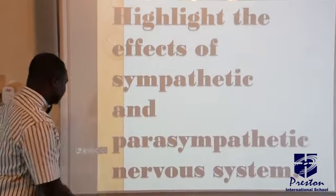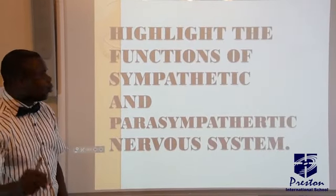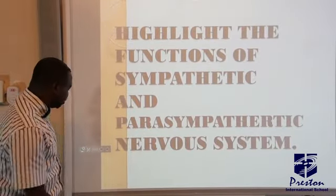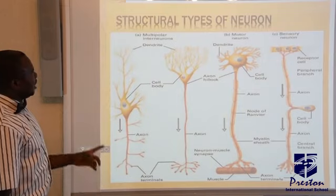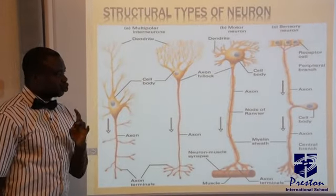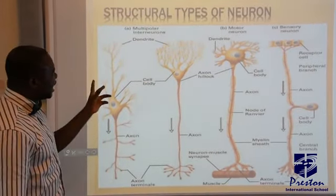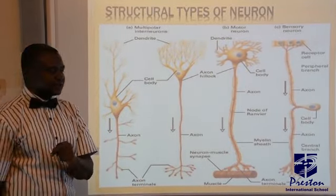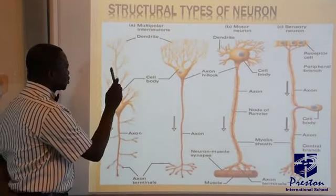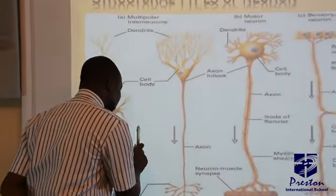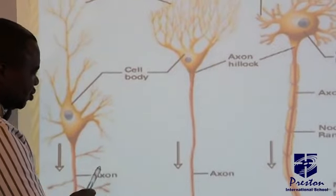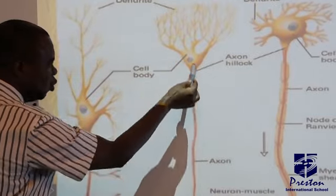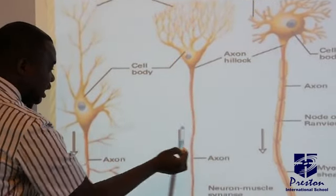We want to look at the differences between them and their effects, and the functions of sympathetic and parasympathetic nervous system. Now, looking at types of neurons, we have three major types. First, we have the intermediate neuron, also called the relay neuron. In this neuron there is no myelin sheath and no node of Ranvier, which is why they are found basically inside the central nervous system.